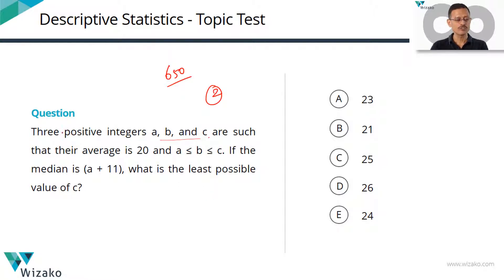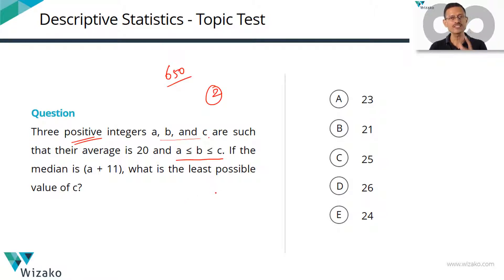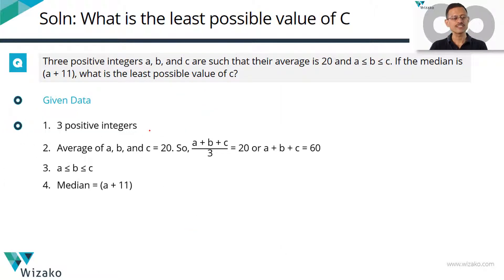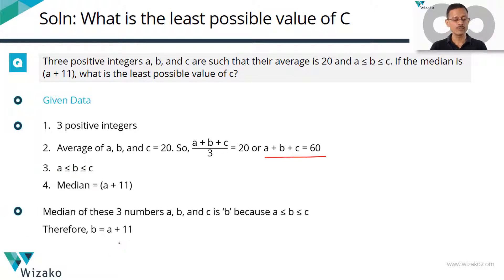Three positive integers a, b, and c. First thing to keep track of is that these numbers are positive integers. They are such that their average is 20, and a ≤ b ≤ c — so they need not be distinct numbers. The median is a plus 11. What is the least possible value of c? Put down these key points: these are positive integers, the average is 20, so a + b + c = 60. And since a ≤ b ≤ c, the median is b, so b = a + 11.